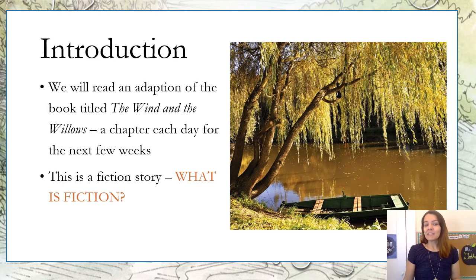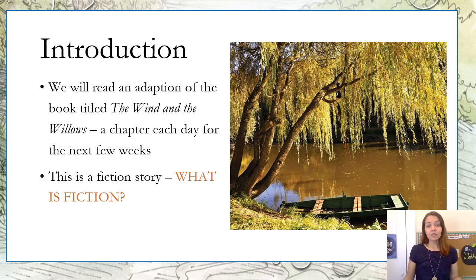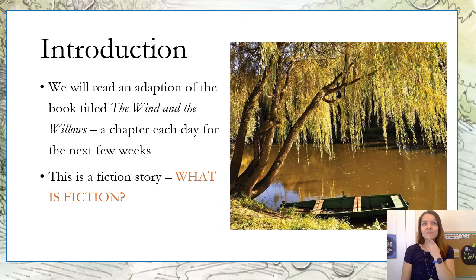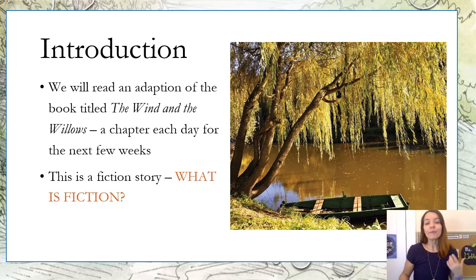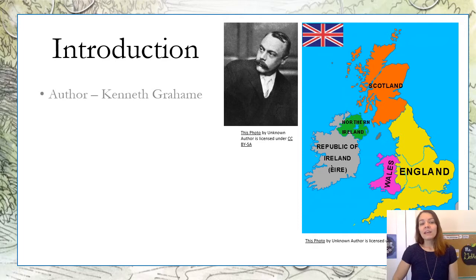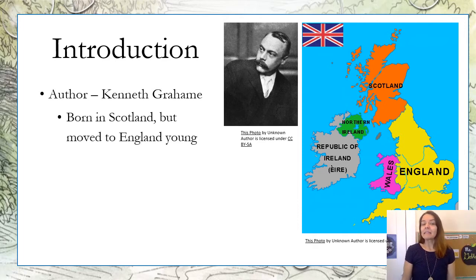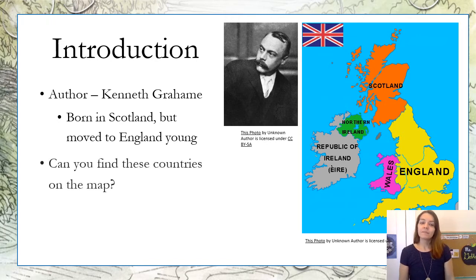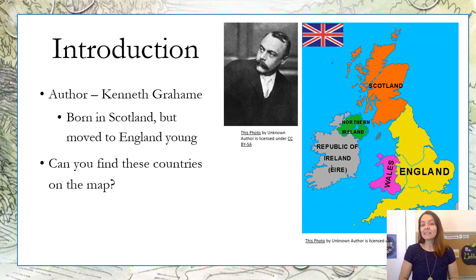Today we're going to start reading an adaptation of the book titled The Wind and the Willows, and we'll read a chapter each day for the next few weeks. This is a fictional story — fiction means fake, it's not real, it's not based on true events. This story was written by Kenneth Graham, who was born in Scotland but moved to England when he was young. If you look at the map, Scotland is the orange country and England is beneath it in yellow.